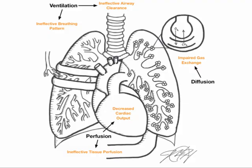To summarize, there are three key cardiopulmonary processes: ventilation, diffusion, and perfusion. Nursing diagnoses for ventilation include ineffective airway clearance and ineffective breathing pattern. The nursing diagnosis for diffusion is impaired gas exchange. Nursing diagnoses for perfusion include decreased cardiac output and ineffective tissue perfusion. I have posted a supplemental handout that summarizes this content. I hope you enjoyed the content and good luck studying for your exam next week.